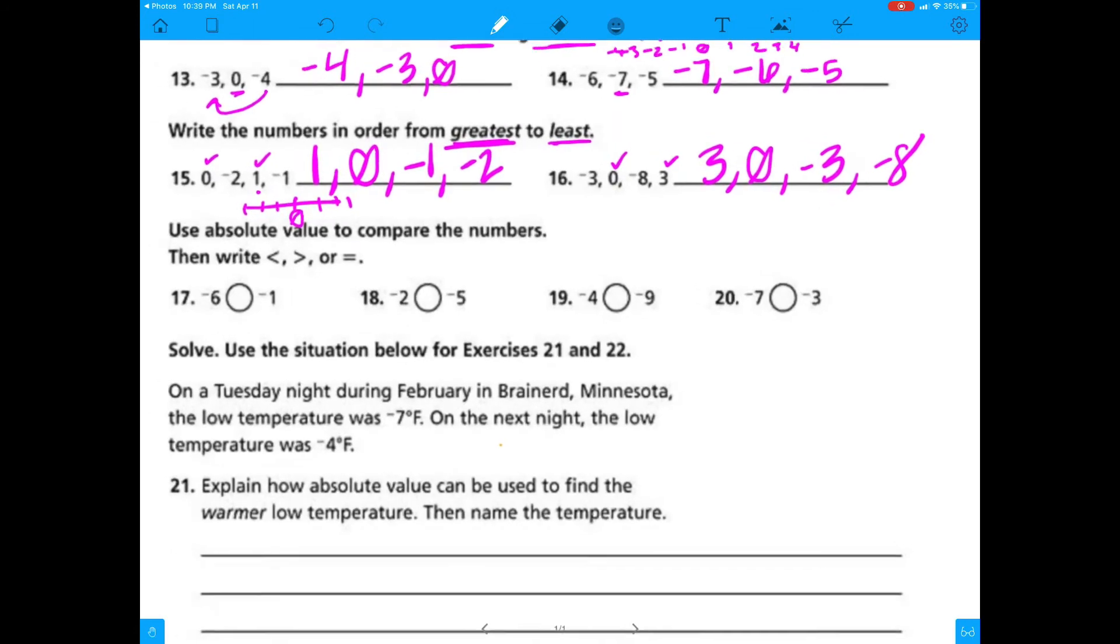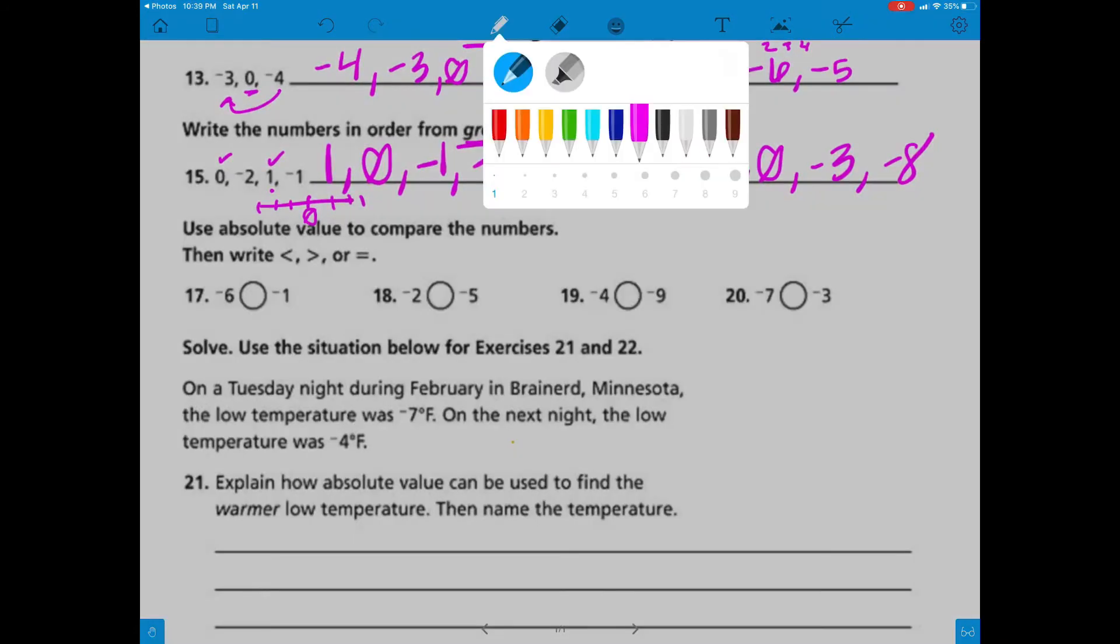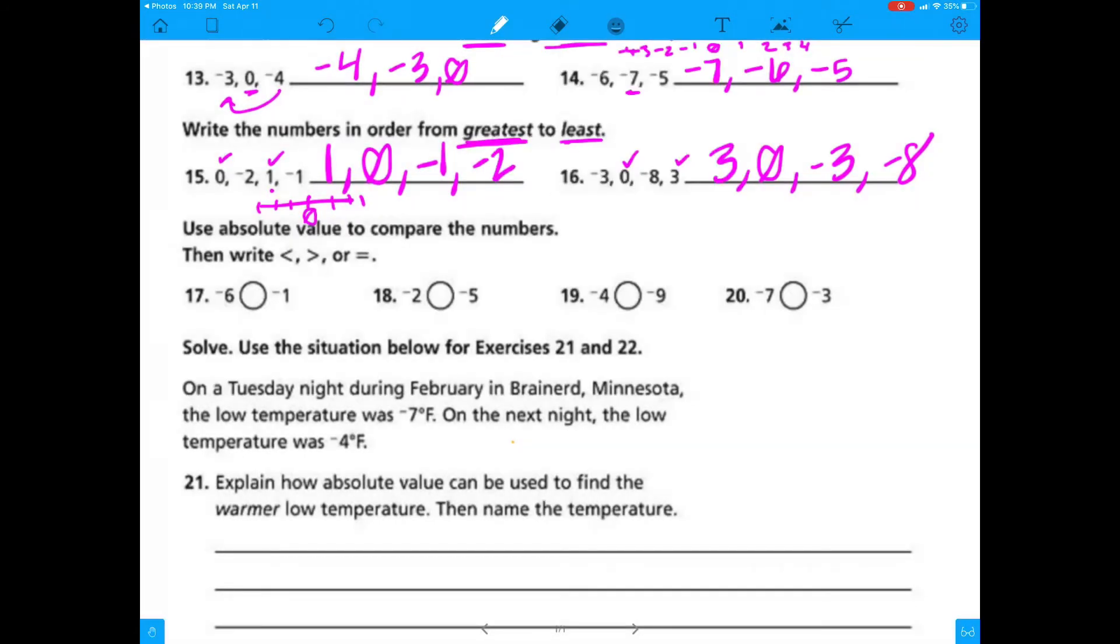We're going from greatest, larger, so to the right of 0, all the way to the left. Absolute value is distance from 0. A negative number can have an absolute value. It has a distance from 0. A positive number can have an absolute value. It's a distance from 0.